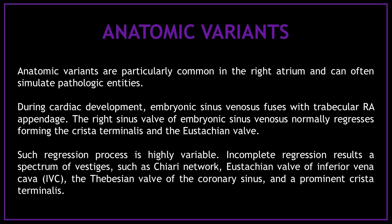Now let's talk about anatomic variants. Anatomic variants are particularly common in the right atrium and can often simulate pathologic entities. During cardiac development, embryonic sinus venosus fuses with the trabecular right atrium appendage. The right sinus valve of the embryonic sinus venosus normally regresses, forming the crista terminalis and the eustachian valve. This regression process is highly variable, and incomplete regression results in a spectrum of vestiges, including the Chiari network, eustachian valve of the inferior vena cava, the thebesian valve of the coronary sinus, and a prominent crista terminalis.